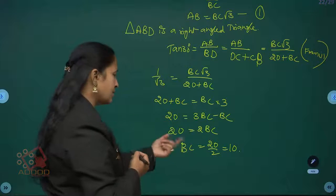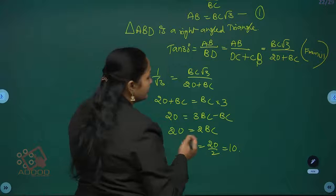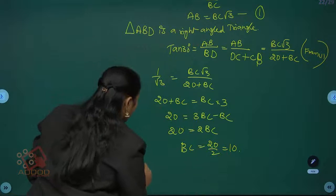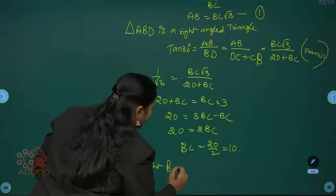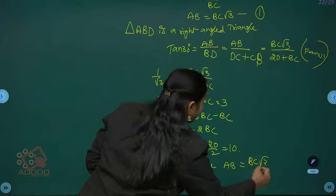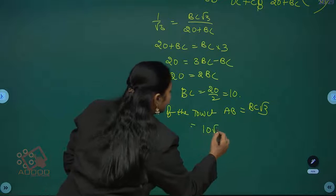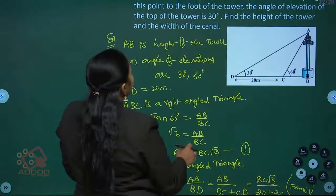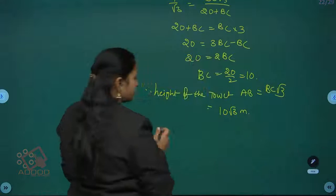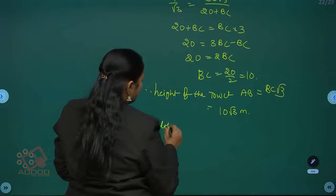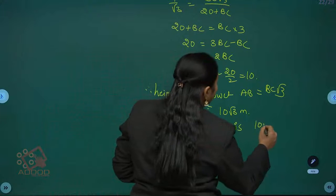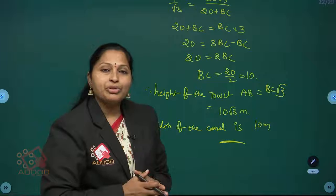Therefore the width of the canal is 10 meters. The height of the tower AB equals BC into root 3 equals 10 into root 3 meters. So height of the tower is 10 root 3 meters and the width of the canal BC is 10 meters. Let's move to the next question.